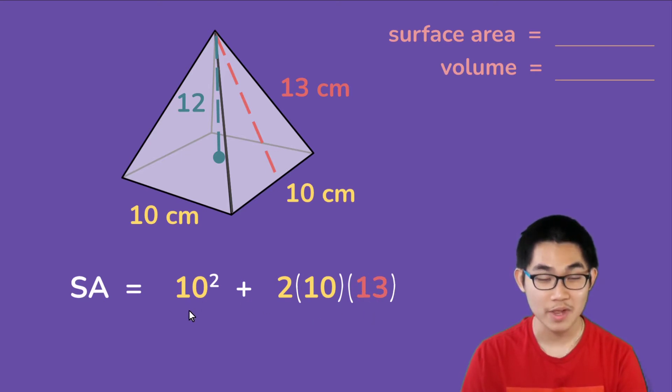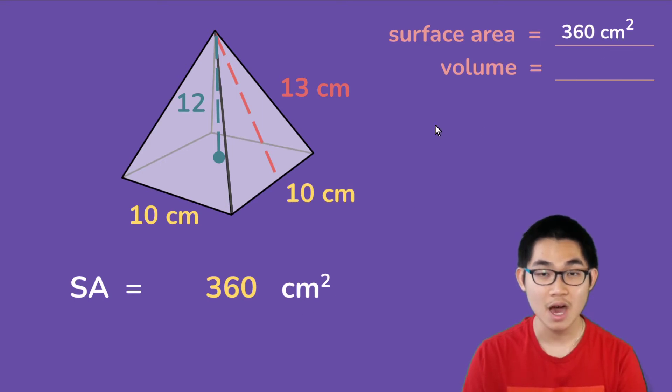And so over here 10 to the power of 2 is 100, and over here 10 times 13 is 130, and 130 times 2 is 260. And so the surface area is 100 plus 260, which is equal to 360 centimeters squared. And that is the surface area of this pyramid.